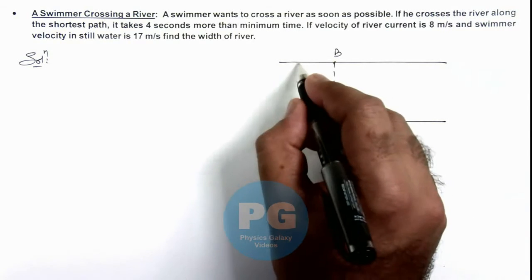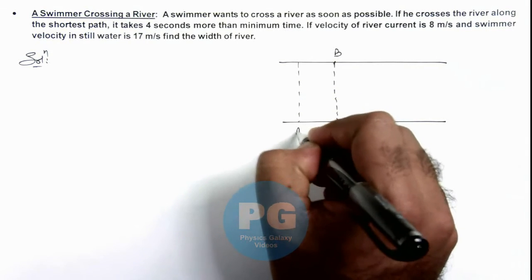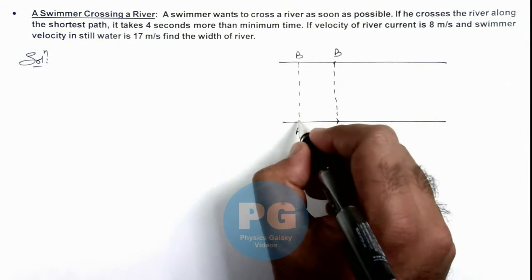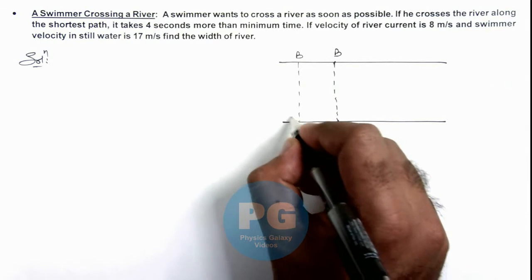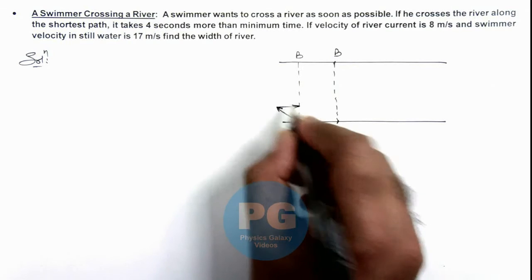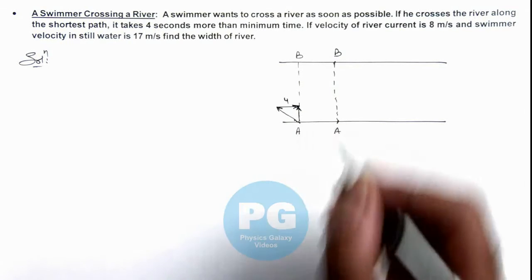So if we consider 2 cases, say in going from A to B, we can see if a swimmer is crossing the river along the shortest path, he has to head in some direction such that when river current is added, the resulting velocity is along this.